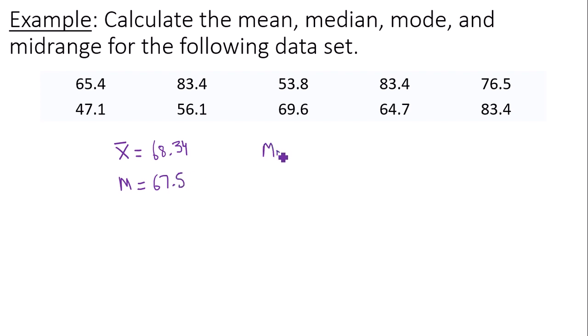Now what about the mode? Well, the mode is the number that occurs the most often. If there is no number that repeats at all, then there is no mode. However, if I look at the data set, notice that 83.4 repeats twice. So the mode is actually 83.4.